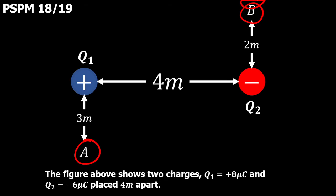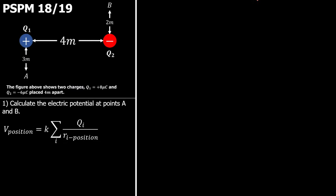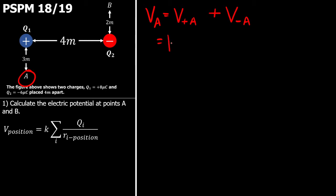Let's look at the first question, which is calculating the electric potential at points A and B. So if you look at A, there are two contributions. Talking about the potential at A, the first contribution is from the positive charge, so V positive A, and the second one is the contribution from the negative charge, so V negative A. Since K is going to be common throughout, I'll just take it out. K is 9 times 10 to the power of 9 newton meter squared per coulomb squared.